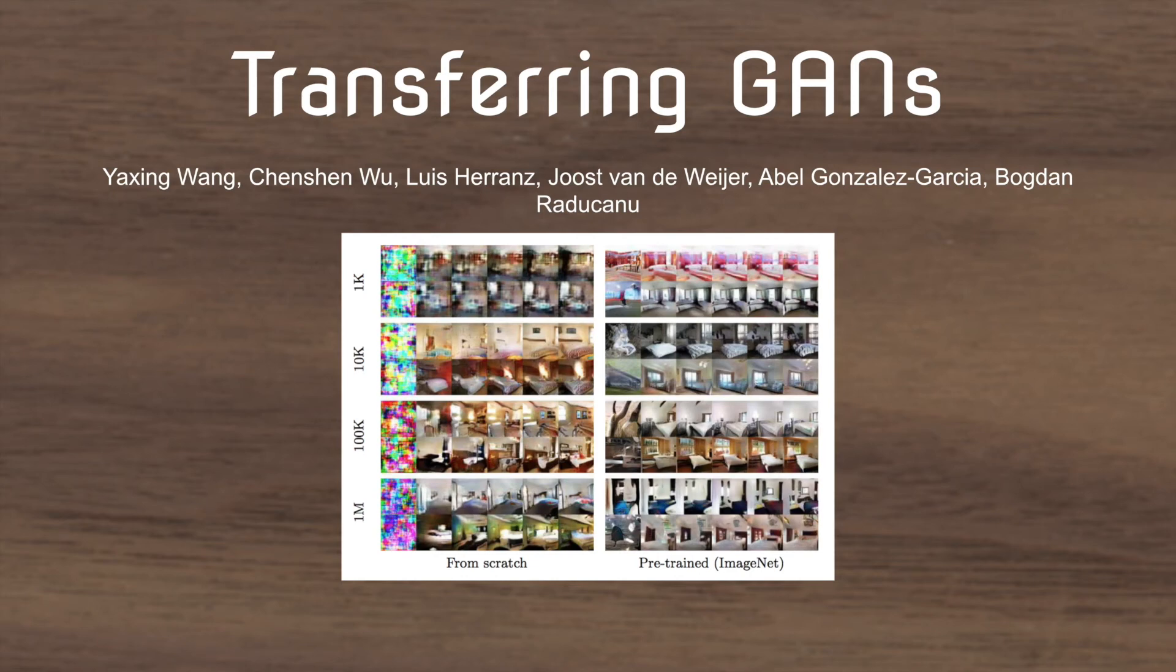This video introduces the idea of applying transfer learning to generative adversarial networks. Transfer learning is one of the most popular ideas in classification tasks such as classifying a dog or a cat, and it hasn't really been applied to generative adversarial networks.